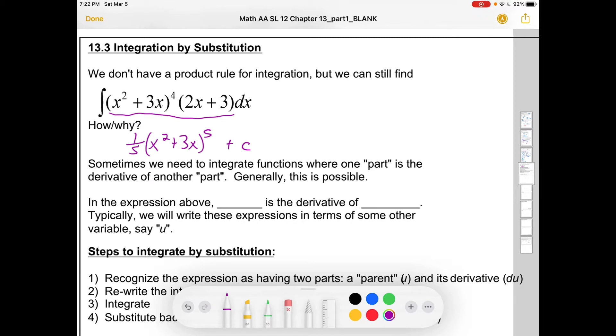And the reason that this one works is that this function kind of has two parts. It has this (x² + 3x)⁴ part, and then it has this 2x + 3, and they're multiplied together. But there's something fishy going on between them. It's kind of like this is the parent binomial, and here is the derivative that corresponds to it. So we actually have a situation where the chain rule is sort of playing out, and so we need to integrate something where the chain rule has essentially happened. Generally, this is possible.